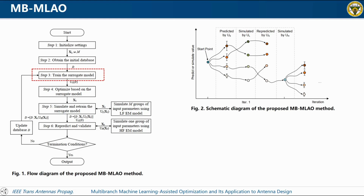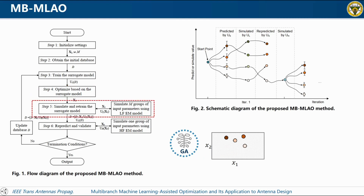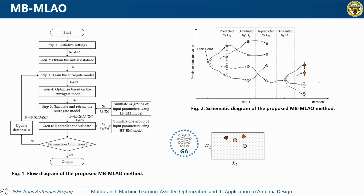Step four: optimize based on the surrogate model — use a global algorithm to optimize the surrogate model constructed in step three, obtaining the optimal values under M groups of different branches. Step five: simulate and retrain — use the low fidelity simulation to calculate the above M groups of input parameters, then retrain the surrogate model.